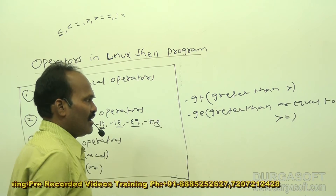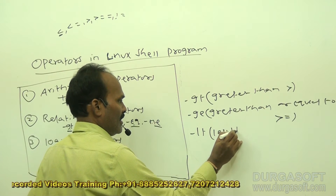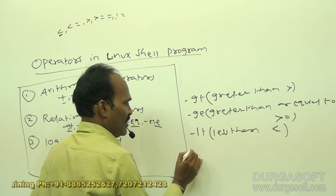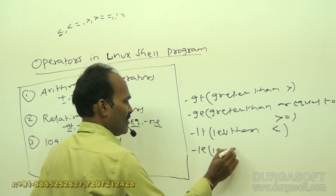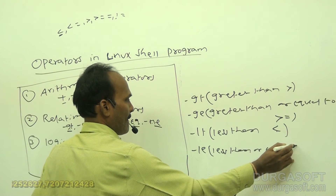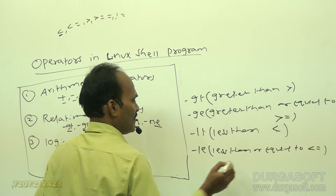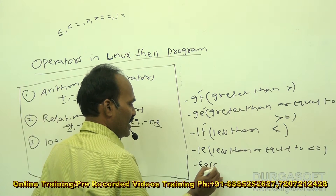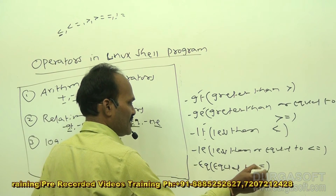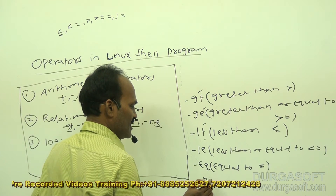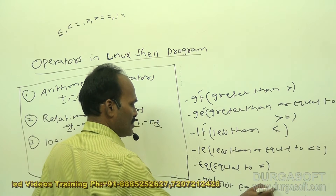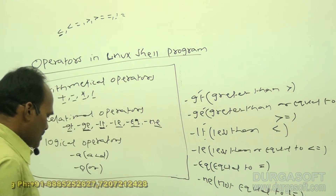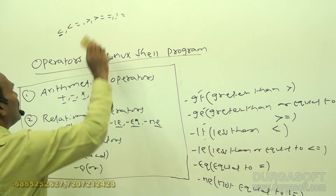Next, -lt means less than — in other languages we use the less-than symbol. Then -le means less than or equal to. Next, -eq means equal to — that equals sign is the assignment operator in other languages — and -ne means not equal to.